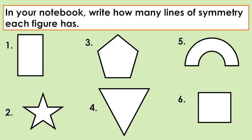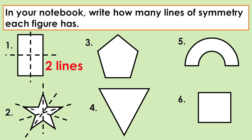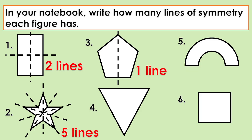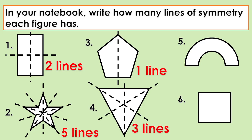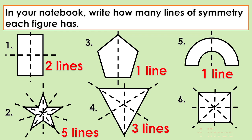Next, in your notebook, write how many lines of symmetry each figure has. Number one — two lines. Number two — five lines. Number three — one line. Number four — three lines. Number five — one line. Number six — four lines.